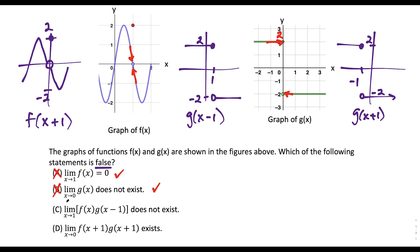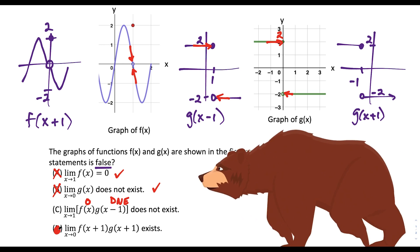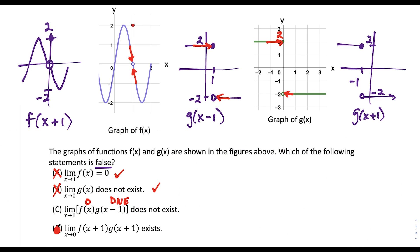Then we get to choice C: the limit as x approaches one of f of x times g of x minus one. Looking at the graph of f of x, the limit as x approaches one from left and right is heading towards zero. But when you look at the limit as x approaches one on the graph of g of x minus one, as we approach one from the left and right side, notice that the limit does not exist. You might look at this and say zero times 'does not exist' would tell us this does not exist, so it has to be choice D. But no — this is a very, very, very dangerous bear trap.